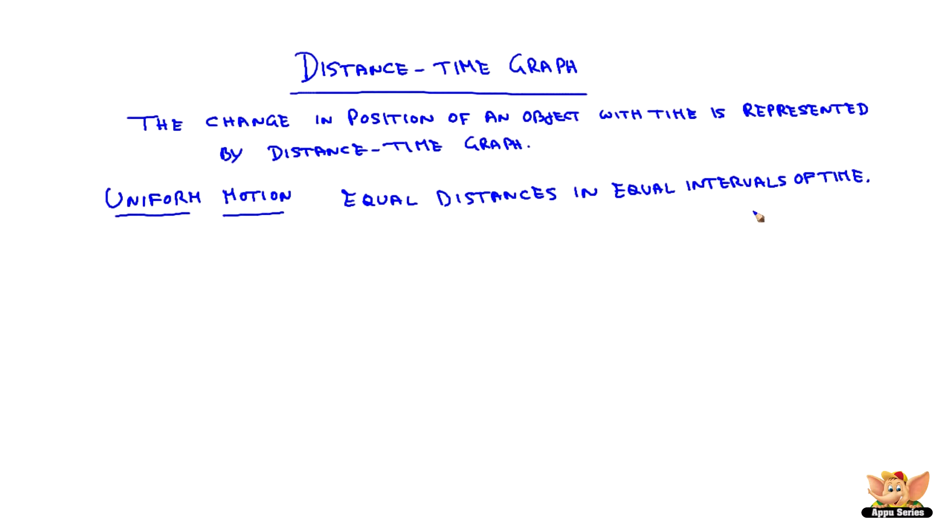Since it travels equal distances in equal intervals of time, when we draw a distance-time graph with the x-axis being time and y-axis being distance, it will be a straight line. It means the object is traveling with uniform speed.